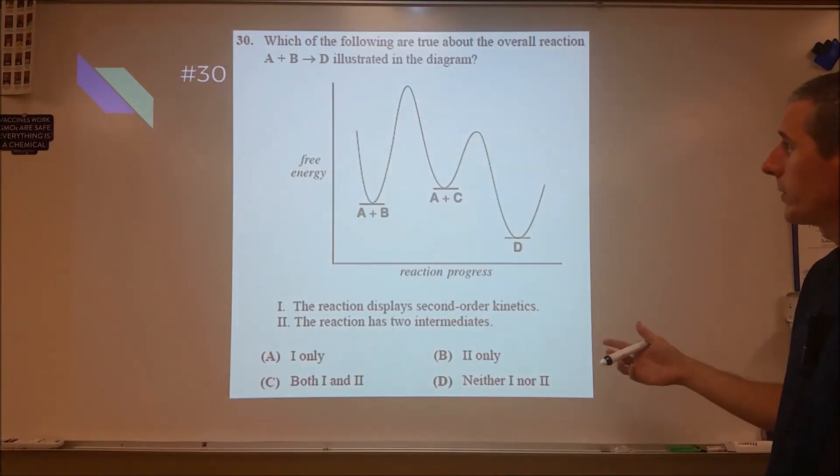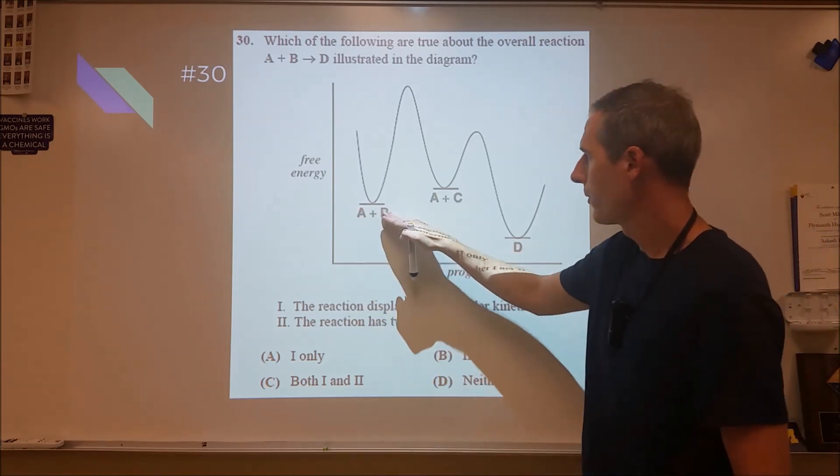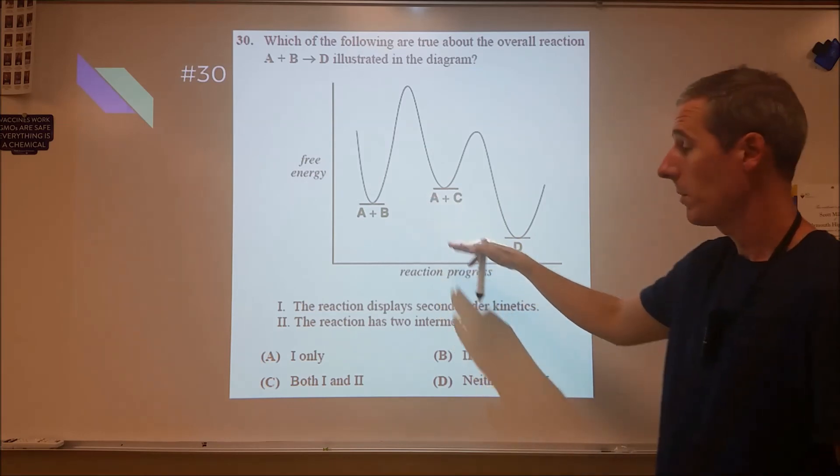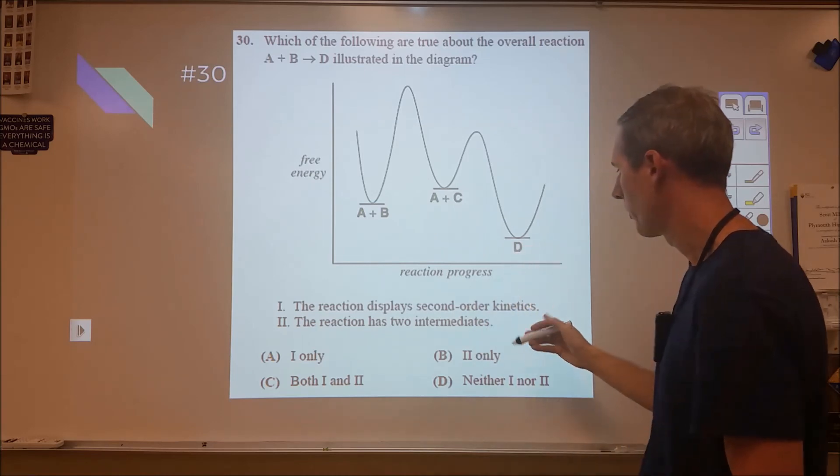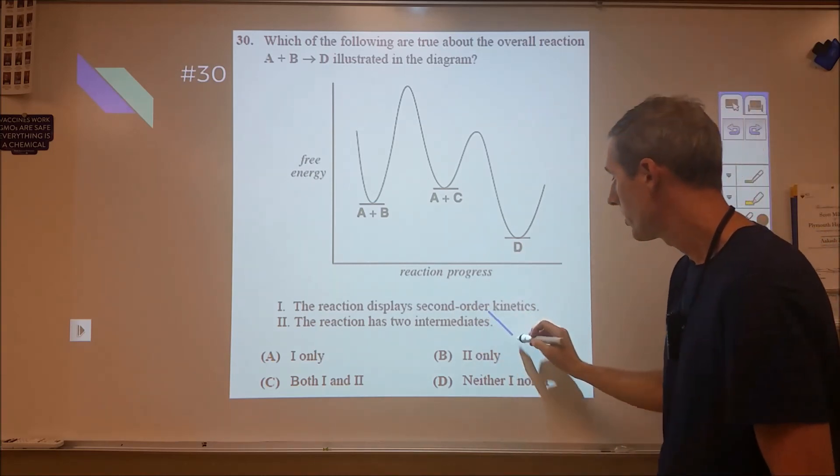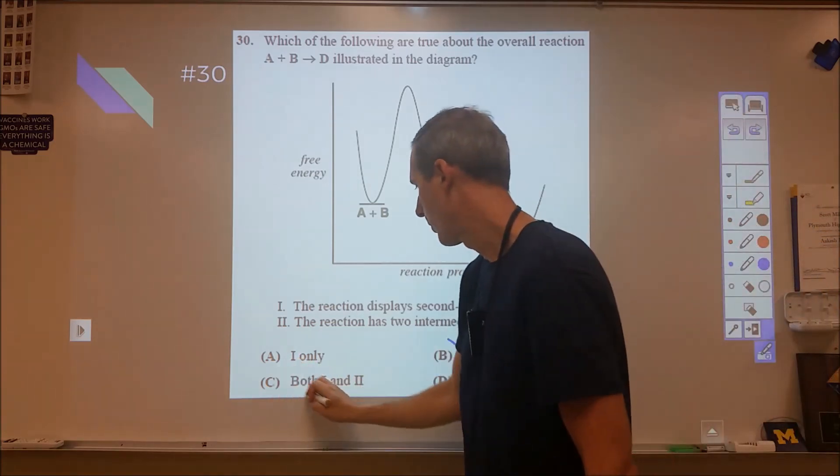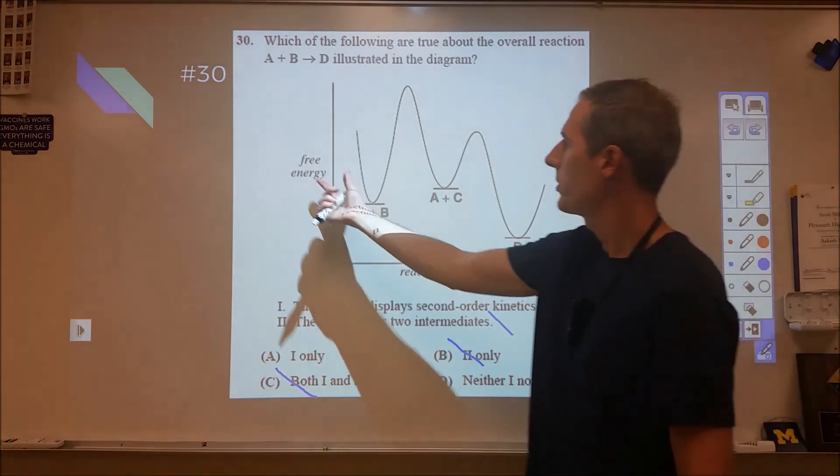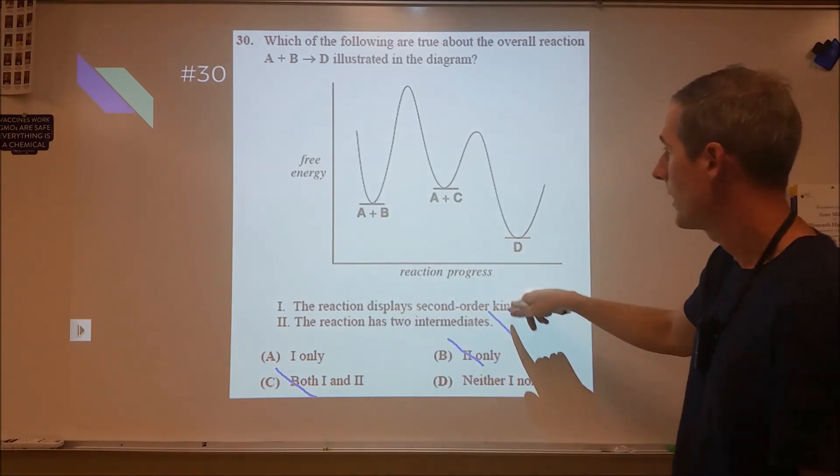So for 30 here, this one is one that I'm having a hard time with kind of coming up with a full explanation on. We have a reaction where A and B react to form D. In the first step of the reaction, A and B collide and they form B into C and A stays the same. So when it says the reaction has two intermediates, we know that the only intermediate is going to be C before we form the final product of D. So we know that two is incorrect. Two can't be correct. Both can't be correct. So we're down between A and D. I ended up going with A originally because I didn't notice that it said free energy here as opposed to energy or entropy.